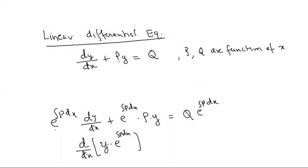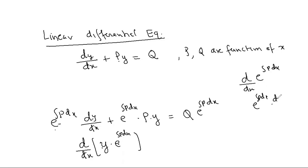Check if it is right or wrong. Apply: derivative of the first, plus second into derivative of e raised to integral p dx. You know that the derivative of e raised to u is e raised to u into derivative of u. The integral and derivative cancel, so only p is left. That gives e raised to integral p dx into p, equal to q·e raised to integral p dx.